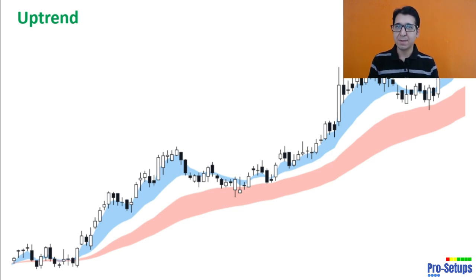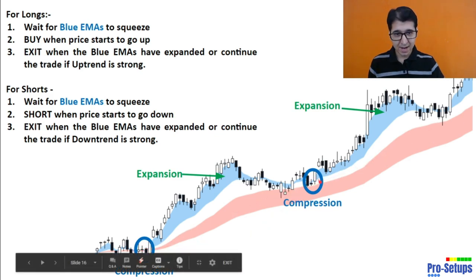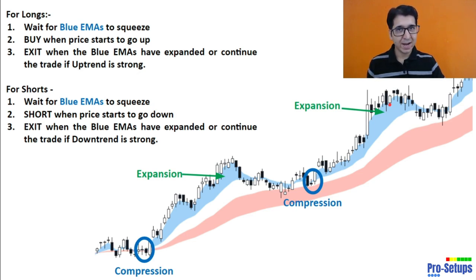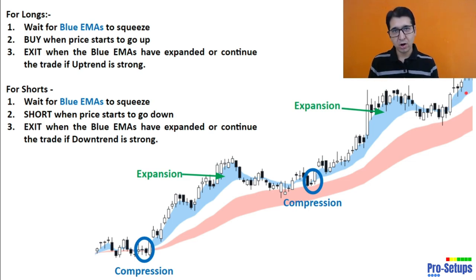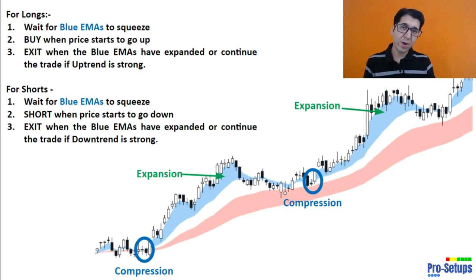We will take advantage of the compression of the blue EMA clouds. In our script we will wait for the blue EMAs to compress, and we will then look to buy when the price starts to go up so that the blue EMA cloud starts opening up. We will look to either exit on expansion or, if we believe that the trend is strong, continue the trade or even add when it compresses again and starts expanding. Similarly in shorts, we will wait for the blue EMAs to compress or squeeze first, enter into shorts when the price starts falling, and look to exit either when the blue EMAs have expanded or continue the trade if the downtrend is strong.